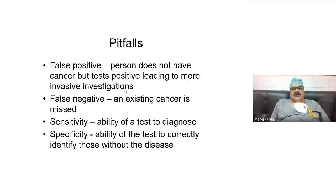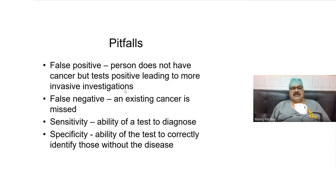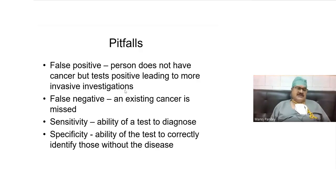Sensitivity is the ability to correctly identify those with the disease, and specificity is the ability to correctly identify those without the disease. If you can identify 100% of those who have the disease, sensitivity is 100%. If you can identify all those who do not have the disease, specificity is 100%. No test has 100% sensitivity and 100% specificity, so we work with a mixture — say 90% sensitivity and 80% specificity.